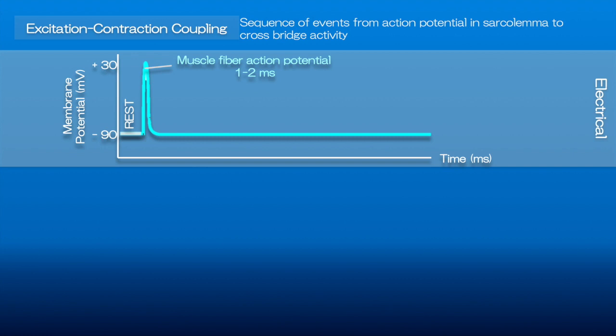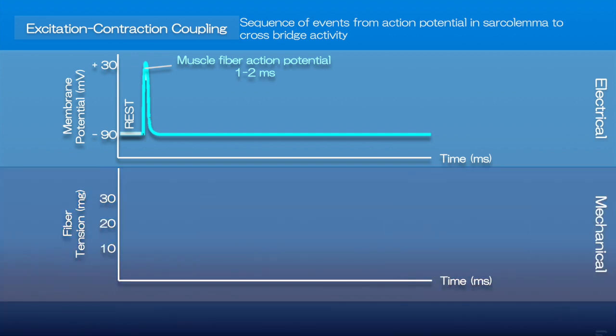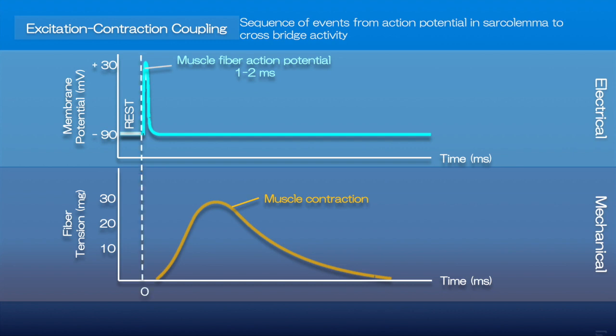The mechanical activity following the action potential may last about 100 milliseconds or more. Between the start of the action potential and the start of tension, there is an interval of a few milliseconds known as the latent period. During this latent period, the processes associated with excitation-contraction coupling are happening.